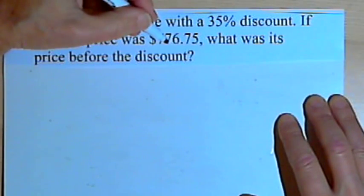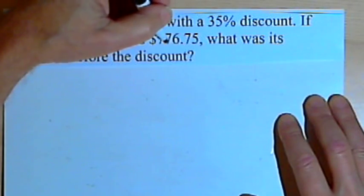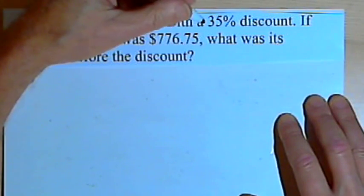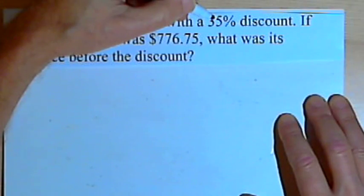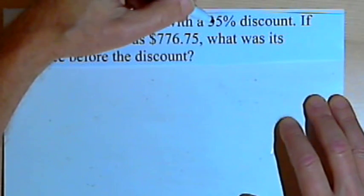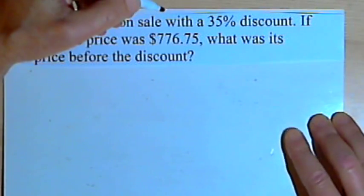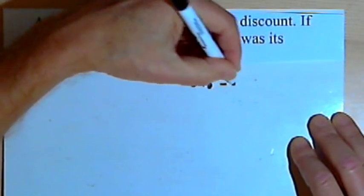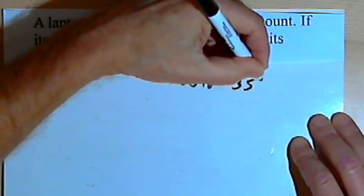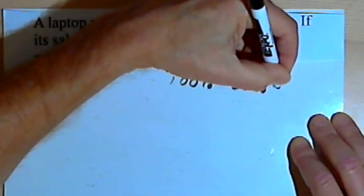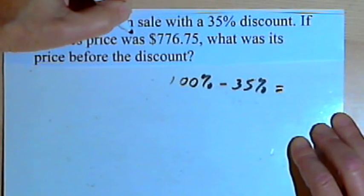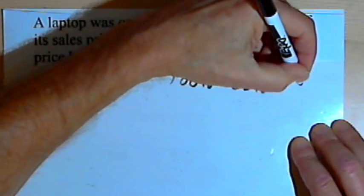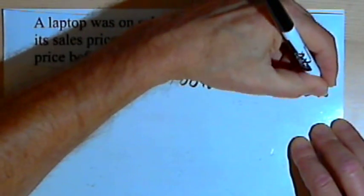This sales price came about from subtracting 35% of the original price from that original price. So if we think of the original price as 100%, and we subtract 35% of it, we end up with the sales price as being 65% of the original.